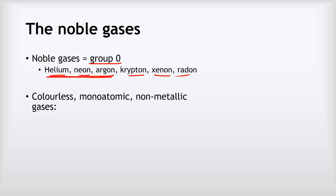These are all colorless, monoatomic, non-metallic gases. The word monoatomic literally means one atom, and what it means is that in helium gas, for example, we don't have He2 molecules or He3 molecules — we just have individual atoms of helium floating around in the gaseous form.